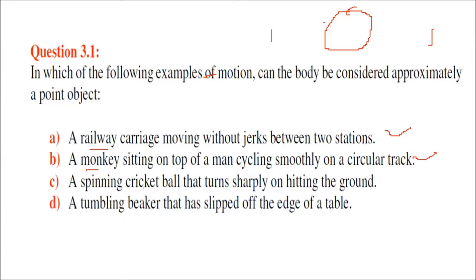A spinning cricket ball that turns sharply on hitting the ground — if we are talking about the pitch, the ball has a substantial size. Here we cannot take the spinning cricket ball as a point object. A tumbling beaker that has slipped off the edge of a table — the object is somewhat comparable to the size of the table, so you cannot take it as a point object.